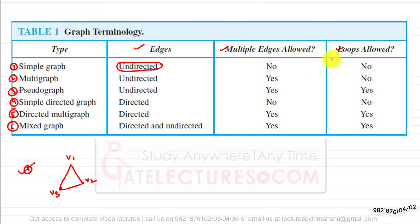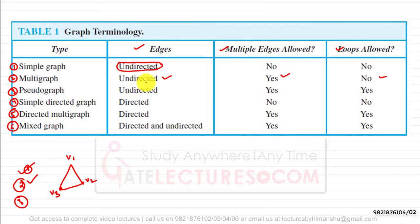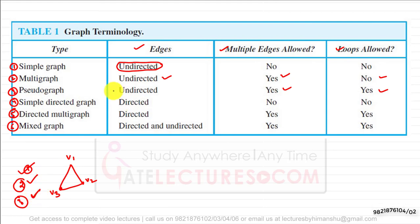A multi graph allows multiple edges but does not allow loops, and the edges are undirected. A pseudo graph allows undirected edges, multiple edges, as well as loops. This is like giving more freedom — any graph which is a simple graph is also a multi graph, and any multi graph is also a pseudo graph.